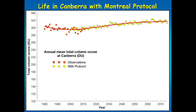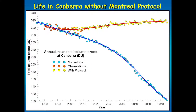You might wonder why the vertical axis extends all the way down to 100 Dobson units when there's such a small variation under the protocol. Well, it's because without the protocol, this is what would have happened to ozone over Canberra. By 2075, it would be down to 100 Dobson units — and keep in mind that anything below 220 Dobson units is considered Antarctic ozone hole-type levels.